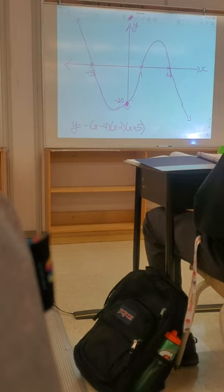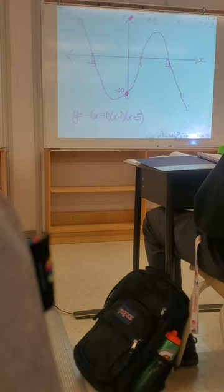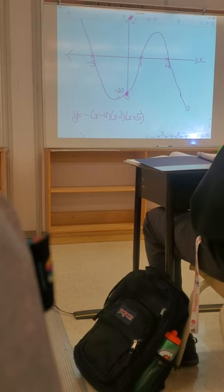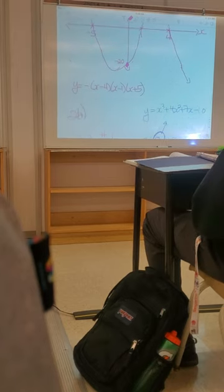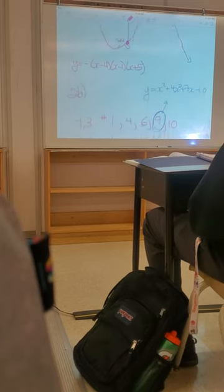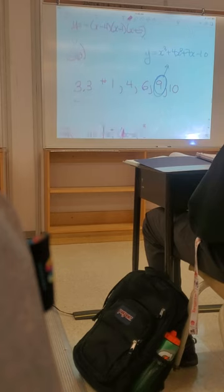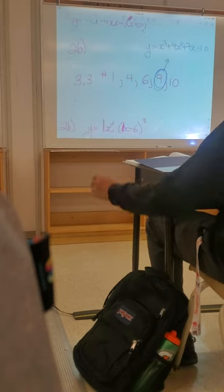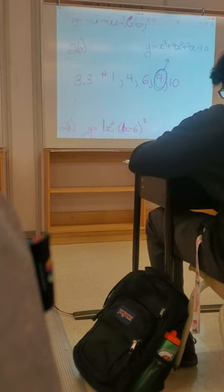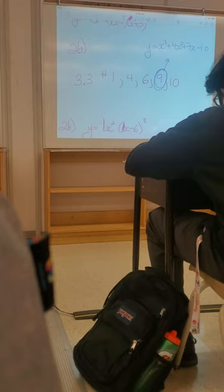Next one: 2B. Let's go through it quick and then maximize our time. The questions assigned are 3.3 numbers 1, 4, 6, 9, and 10. Can we just point out question number 9 — you've got to factor that one yourself.